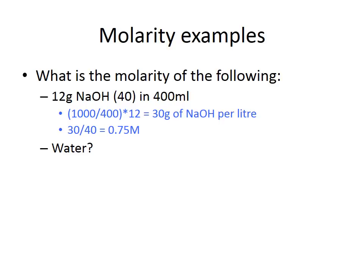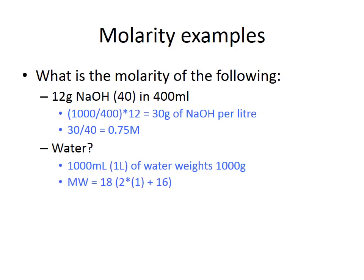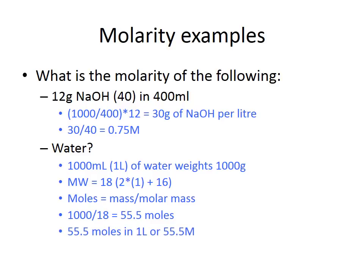We can also calculate the molarity of water itself. One litre of water weighs approximately 1000 g, and the molecular weight of water is 18 (two hydrogens at 1, one oxygen at 16). Dividing 1000 by 18 gives 55.5 moles present in one litre. By our definition of molarity — moles present in one litre — the molarity of water is 55.5 M.